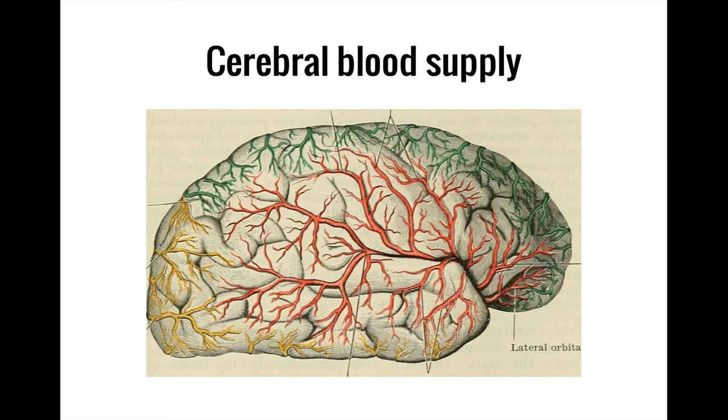In this video we're going to talk about the blood supply of the brain and in particular an arterial structure known as the circle of Willis.